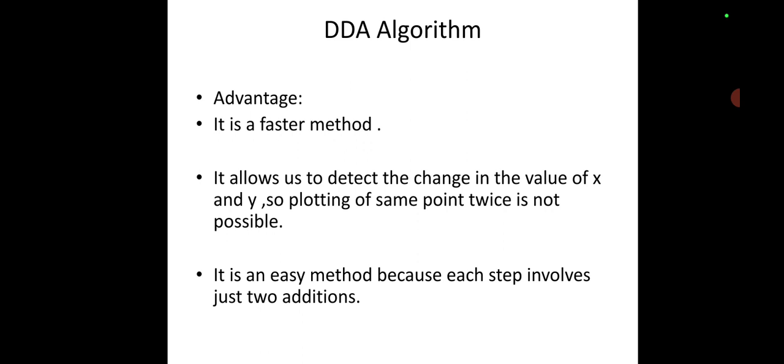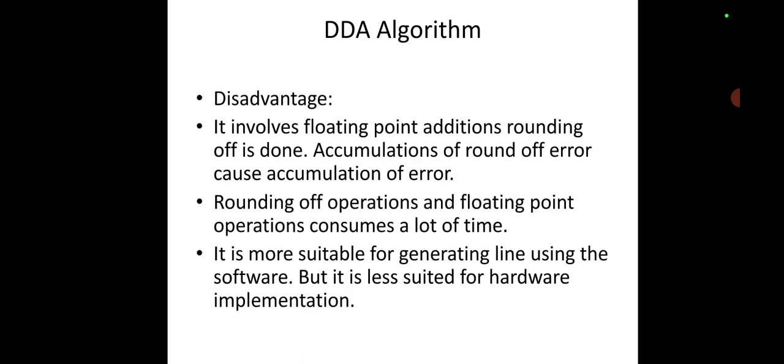It is an easy method because each step involves just two additions, either in x and y. Disadvantages: It involves floating point addition. Rounding off is done - if we are getting some of the points like 4.3 or 2.7, then we have to round off to the next value or to the previous value.